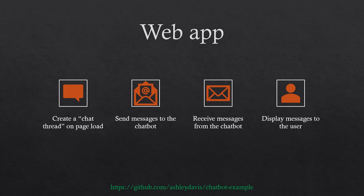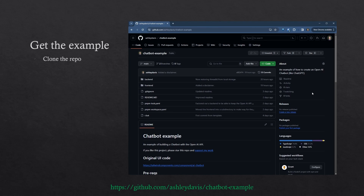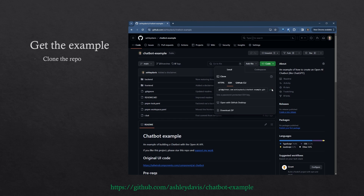We're going to need to add multiple things to our web application to make the chatbot work. On page load, we're going to have to create a chat thread. Then as the user types messages into the input and clicks the send button, we'll send those messages to the chatbot. As the chatbot comes up with answers, we're going to receive and display those messages to the user. At this point you might want to get the example project — you can download the code or clone the repository and follow along.